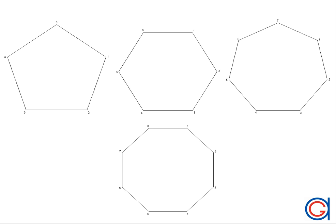The pentagon, the hexagon, the heptagon and the octagon. In the case of the pentagon, let's draw a star polygon by skipping one vertex as described before in order 2 star polygons.